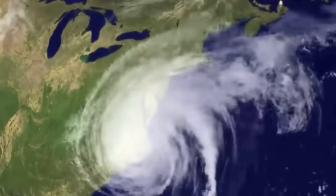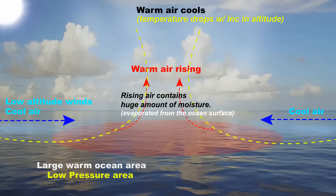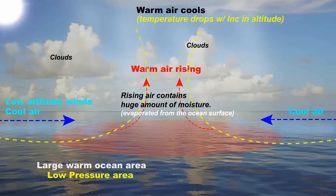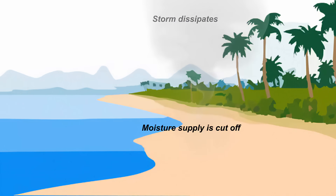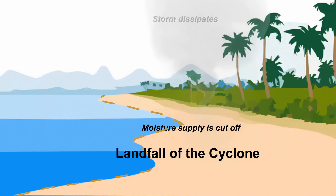Tropical cyclones are intense, and as we read earlier, they occur over ocean surfaces and coastal regions because there is a continuous supply of moisture from the ocean or sea. When a cyclone reaches land, the moisture supply is cut off and the storm dissipates. The place where a tropical cyclone crosses the coast is called the landfall of the cyclone, and the power of the cyclone naturally decreases because the supply of moisture is cut off.